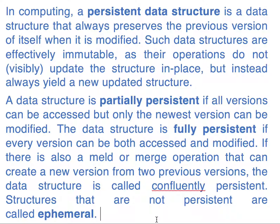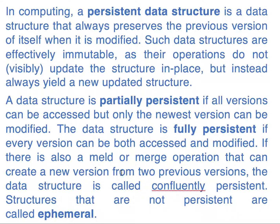For example, with a single file, if I changed line 72 and created version x1, and you changed line 82 and created version x2, then git can merge both versions x1 and x2 and create a new version x3 containing changes in both line 72 and line 82. Such a data structure is called confluently persistent.